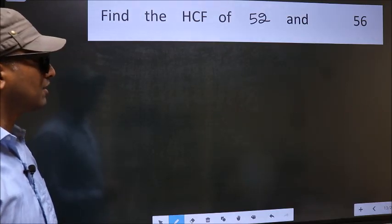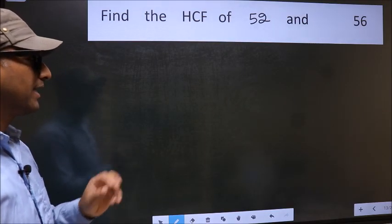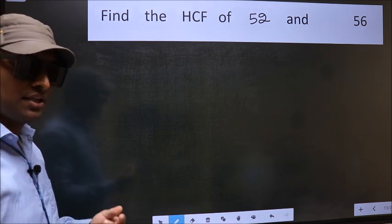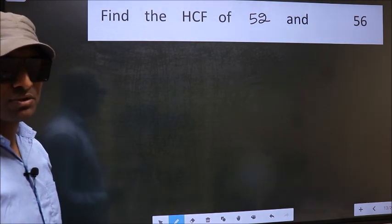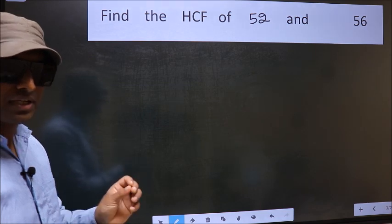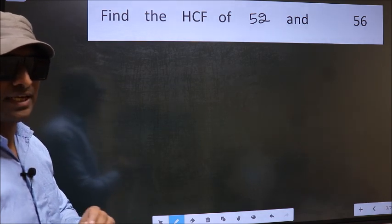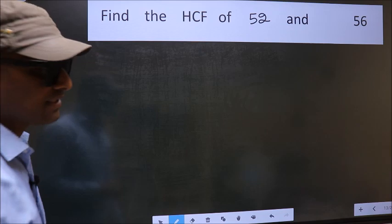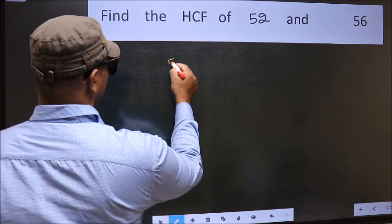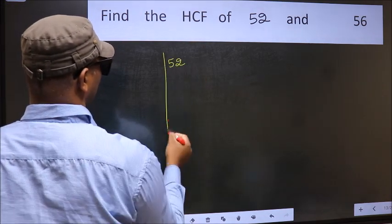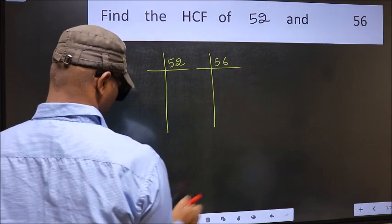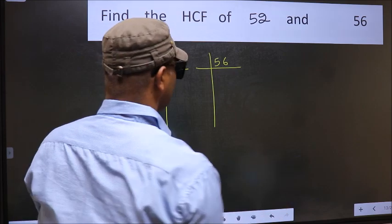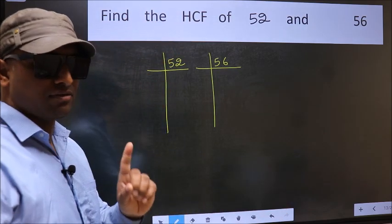Find the HCF of 52 and 56. To find the HCF, we should do the prime factorization of each number separately. What I mean is 52 and 56. This is your step 1.